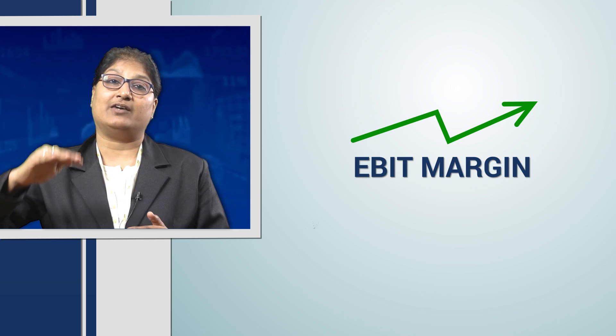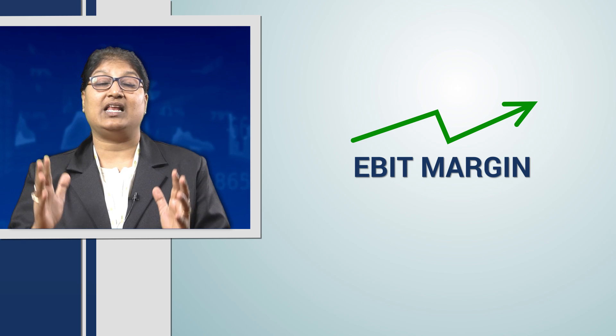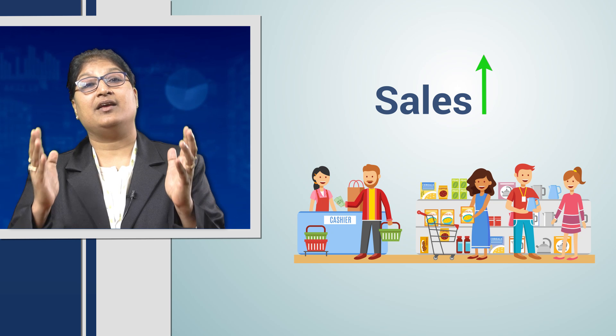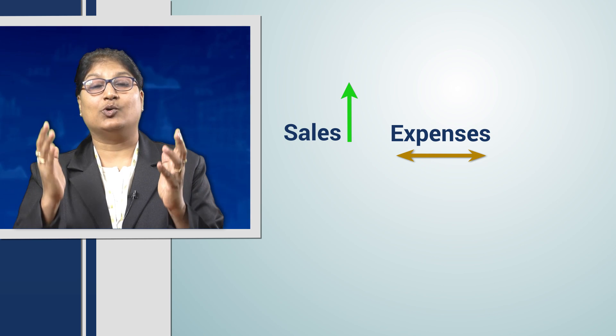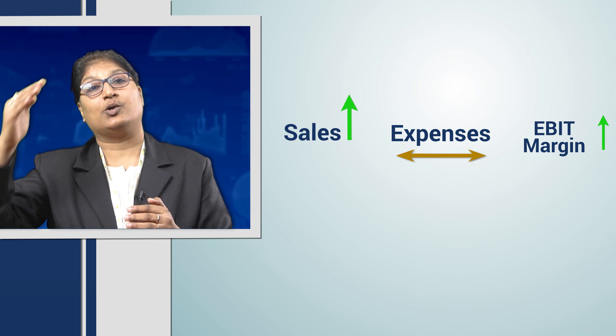Now if the EBIT margin is also growing along with our EBIT, then that means the company is doing very well and sales are continuously increasing. That means the company's products are very well marketed and sales are constantly growing, and expenses are well controlled, which is why the EBIT margin is also growing.